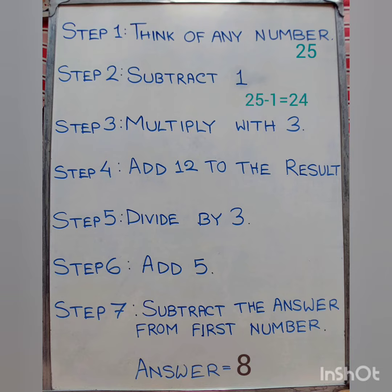So 25 minus 1 is equal to 24. Step 3: Multiply with 3. 24 multiplied by 3, we get 72. Step 4: Add 12 to the result. 72 plus 12 is equal to 84.